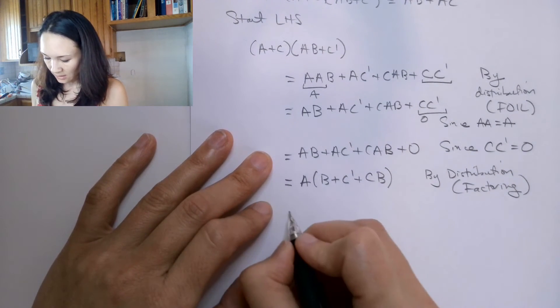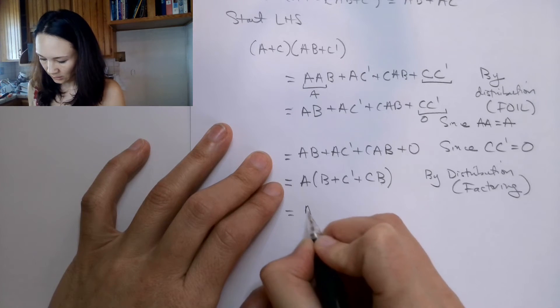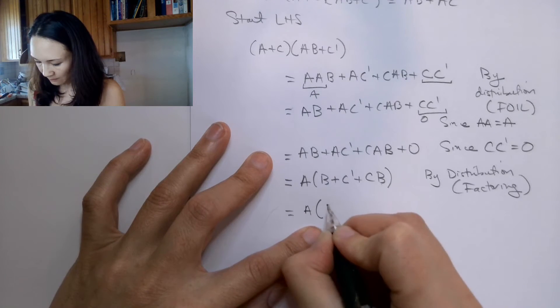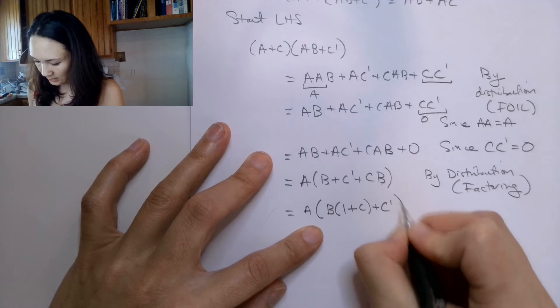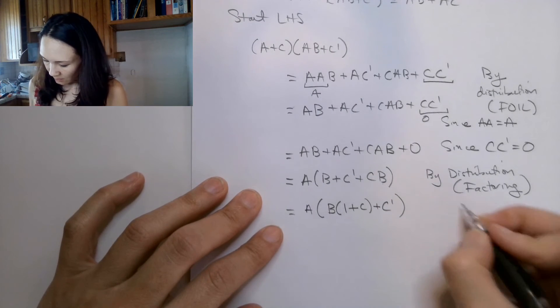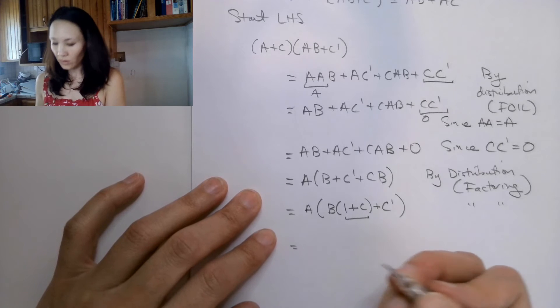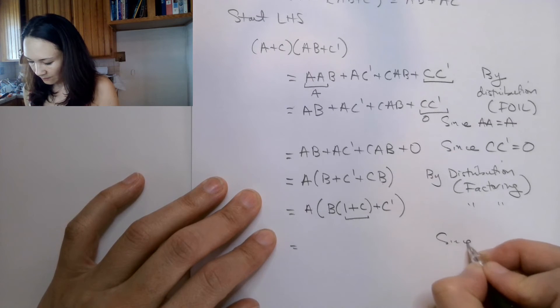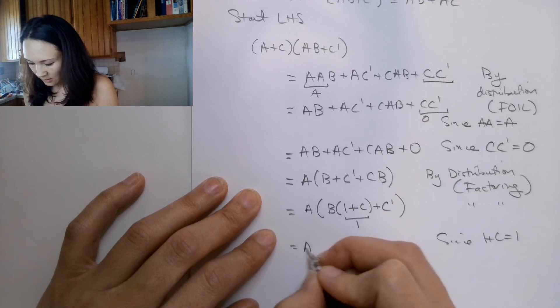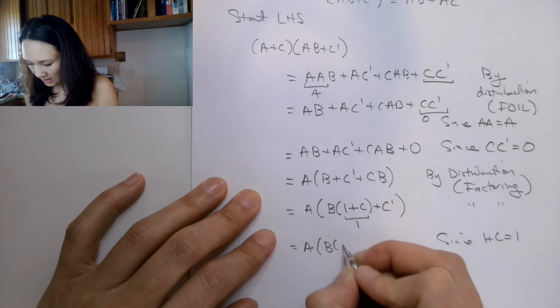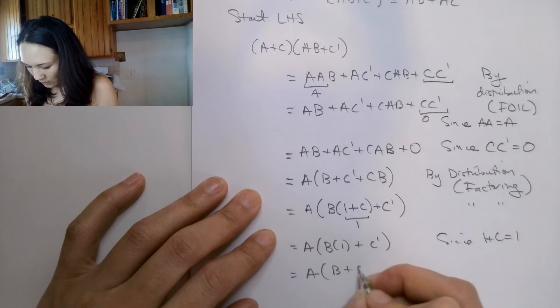And then within this parentheses here, this term has a B and this term has a B. So within here, I'm going to factor a B out. This is going to be A times B anded with one or C and that's still ored with C naught. This is another factoring. This thing here, anytime you or something with one, you're always going to get one. So since one or C is equal to one, I can replace with just a one. So we have A anded with B anded with one or C naught.